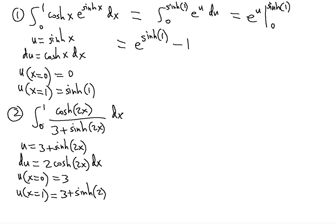So now let's see what we're going to do. We're going to write 3 plus sinh 2 as the upper limit and lower limit is 3. The integrand will be cosh 2x and we'll write this 3 plus sinh 2x as u.